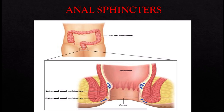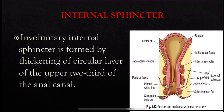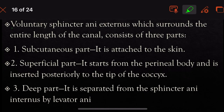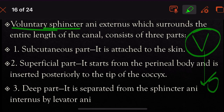There are two sphincters in the anus: the internal anal sphincter and the external anal sphincter. The internal anal sphincter is an involuntary sphincter, formed by the thickening of the circular layer of the upper two-thirds of the anal canal. The external sphincter is voluntary — it is under the person's control.